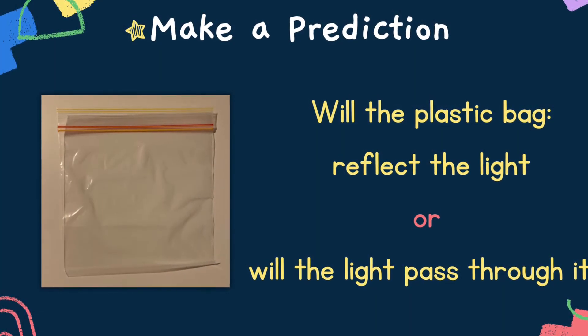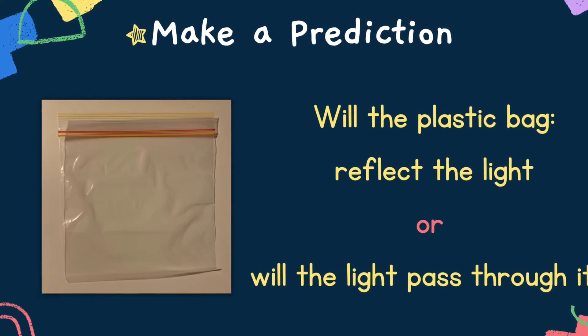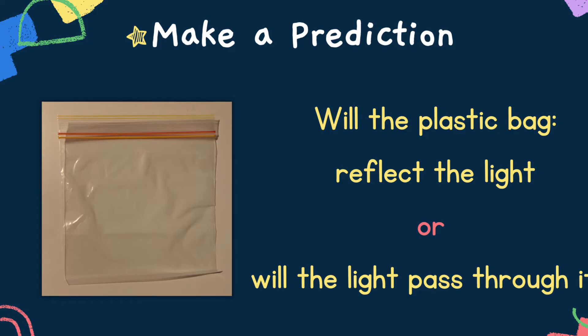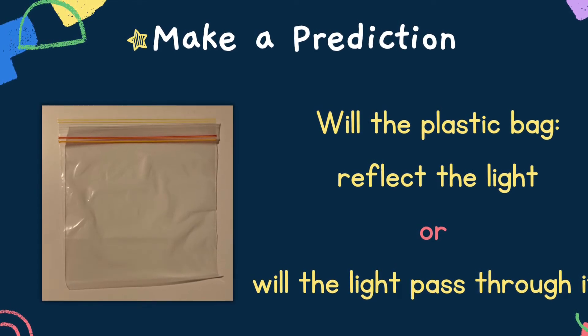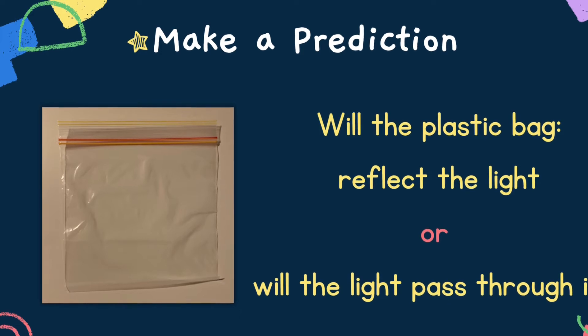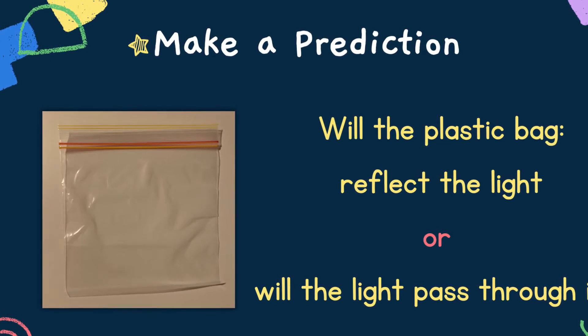Now let's make another prediction. Do you think that the plastic bag will reflect the light? That means it will stop the light from passing through, or will the light pass through it? Have a think about your prediction and then we'll have a look to see what happens. I'm putting the bag in front of the light. As you can see, the wall is still bright with light — this means that the bag does not reflect the light; it lets it pass through.